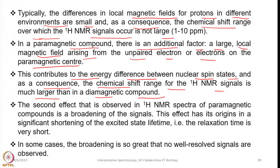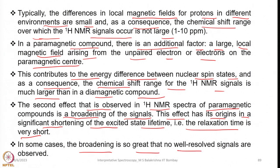Chemical shifts in paramagnetic compounds can go up to −15, −20, or even ±60 ppm. A second effect in 1H NMR spectra of paramagnetic compounds is broadening of signals, originating from significant shortening of the excited state lifetime — that is, very short relaxation times. In some cases the broadening is so great that no well-resolved signals are observed, and we may fail to record a useful spectrum.